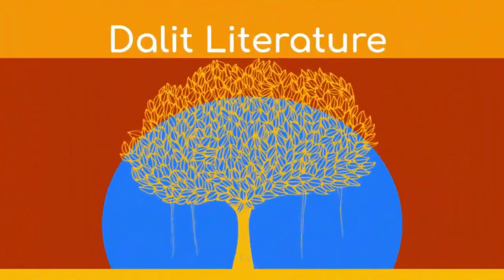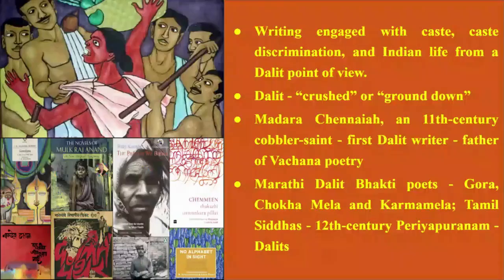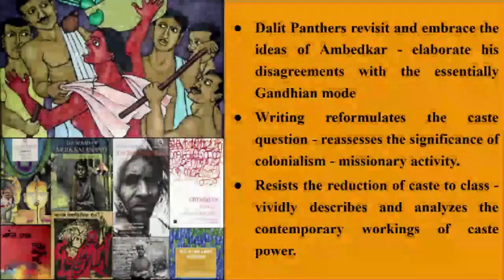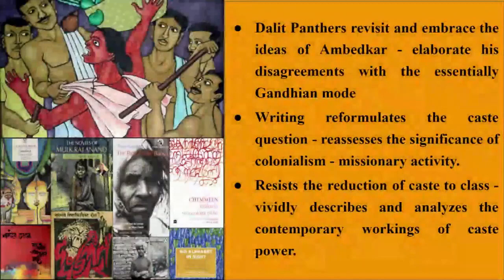Dalit literature is a body of text produced by writers whose caste background used to be referred to as untouchables or scheduled caste. The term Dalit, meaning being crushed or ground down in Marathi, is the nomenclature that Dalit writers have adopted for themselves. The history and roots of Dalit literature is still in the process of being written and negotiated. One of the first Dalit writers was Madara Channaya, an 11th century Vachana poet, regarded by some scholars as the father of Vachana poetry. The origin of Dalit writing can also be traced back to Buddhist literature or to Marathi Dalit bhakti poets like Gora, Chukkamela, Karmamela and to the Tamil Sittas.